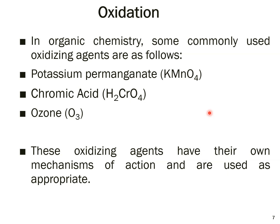Some commonly used oxidizing agents include potassium permanganate (KMnO4), which is very widely used, as well as chromic acid. You may have also studied ozonolysis, where oxygen is added to alkenes. Each of these oxidizing agents has its own mechanism of action; they are not universal and do not share a similar mode of action.